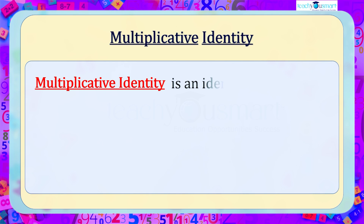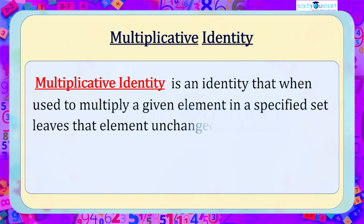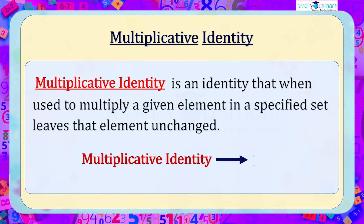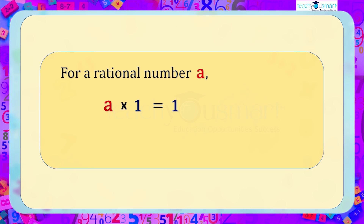The multiplicative identity is an identity that, when used to multiply a given element in a specified set, leaves that element unchanged. The multiplicative identity is denoted by 1. In general, we can say that for a rational number a: a multiplied by 1 equals 1 multiplied by a equals a, or simply a multiplied by 1 equals a.